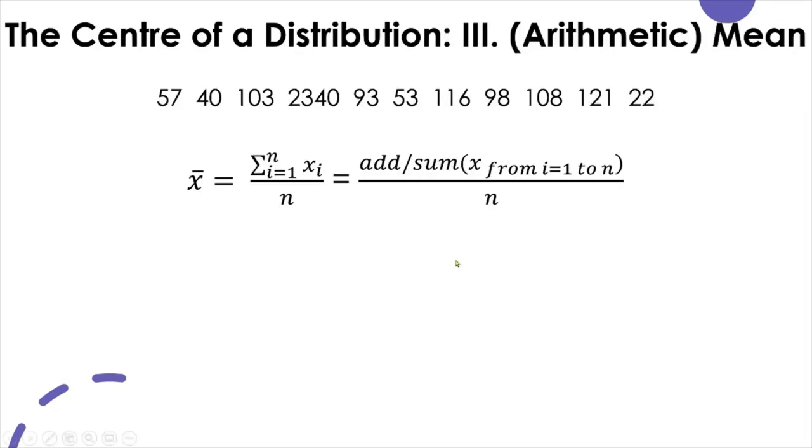The last central tendency measurement is the mean, also known as the average. There are different kinds of means we can calculate, but here we will only talk about the most commonly reported central tendency measure in statistics for interval and ratio level of measurement. I'm pretty sure you all know how to calculate the mean, but here we have a formula to calculate a sample mean.